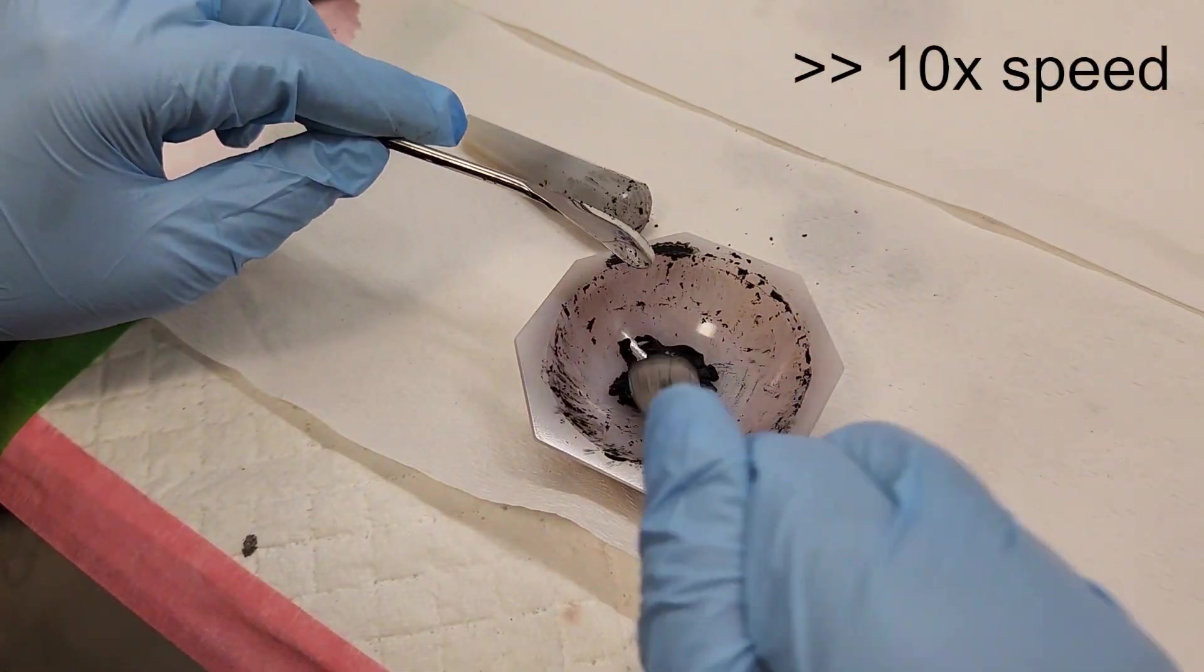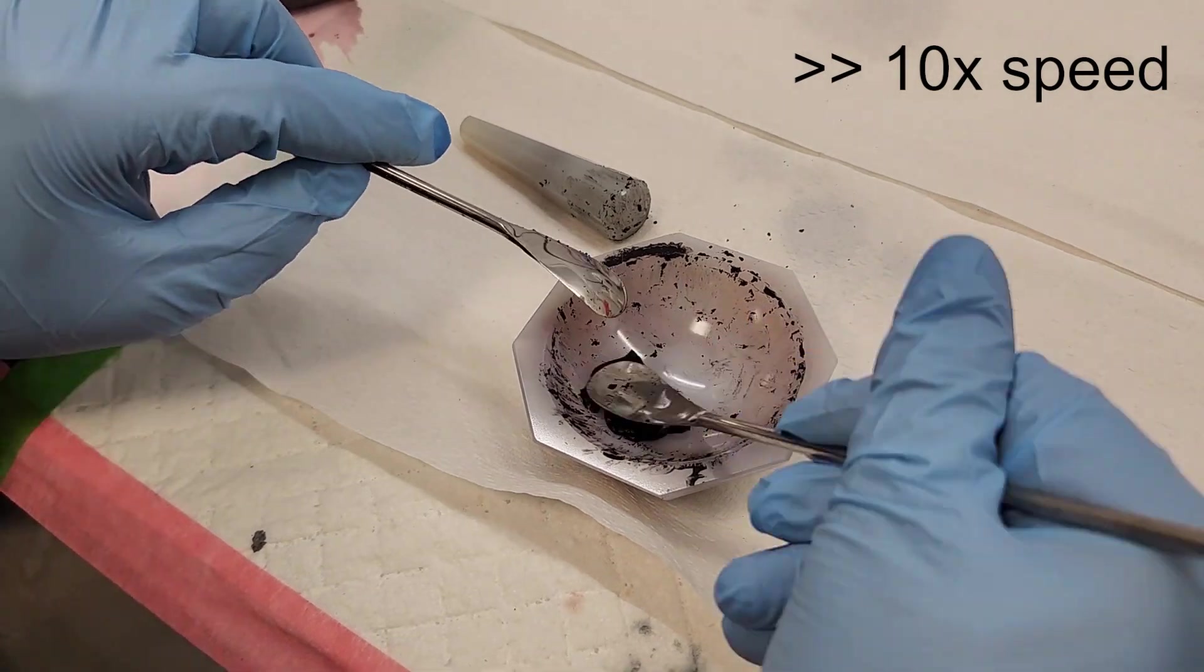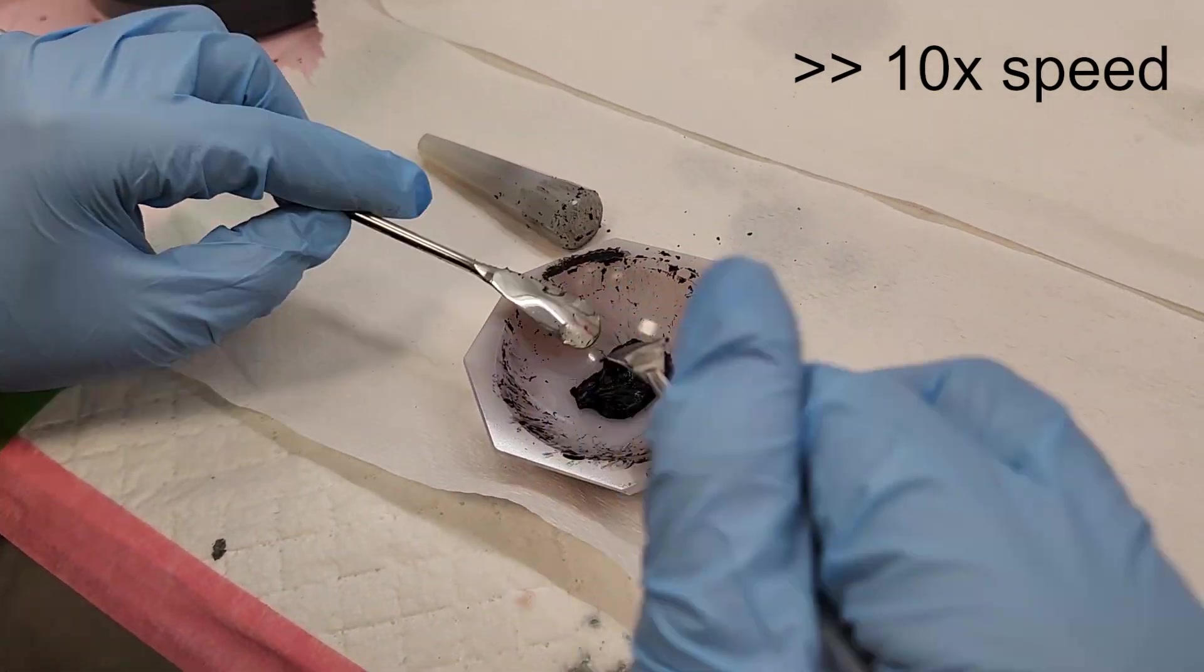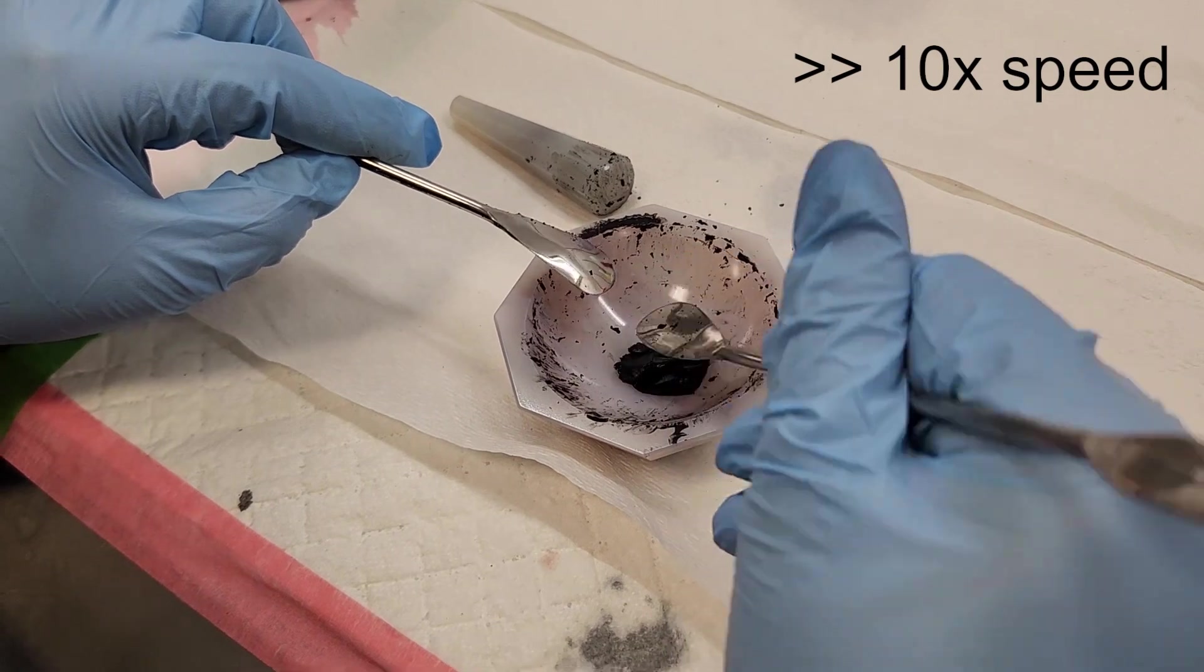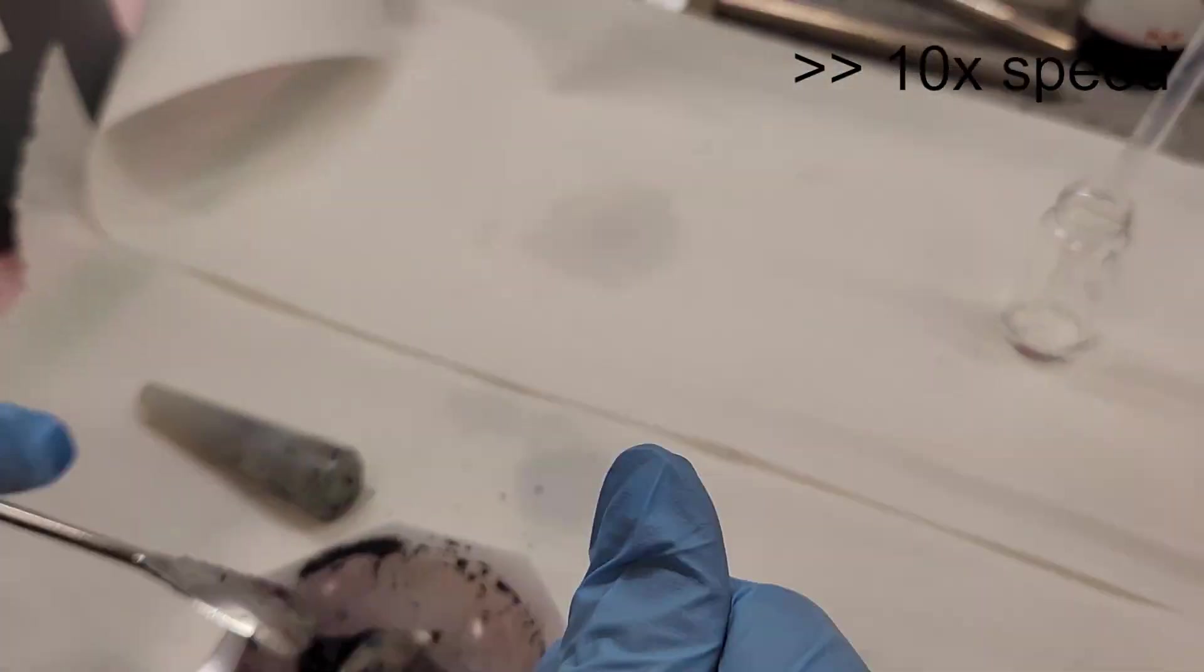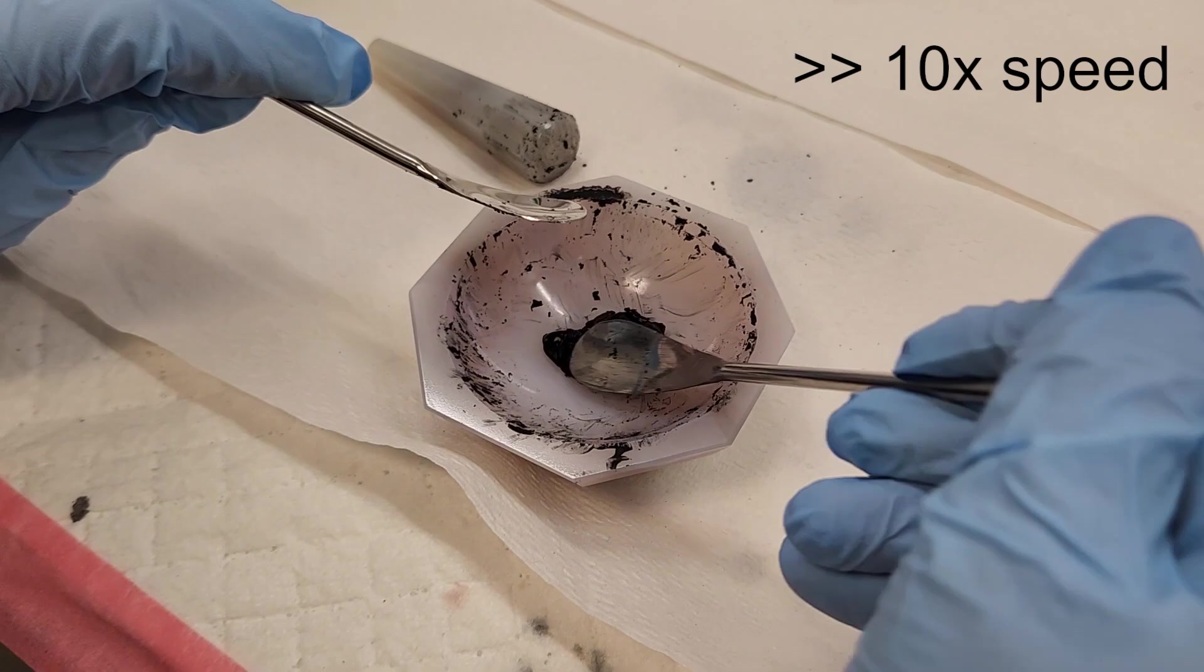Now we only add two to three drops of ethanol at a time to continue the process. This last bit of folding and pressing took about 10 minutes.